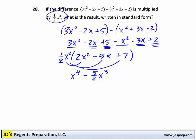Then 1 half times 7 is plus 7 halves. x squared times, there is no variable, leaves me with x squared. So in the end, I have x to the 4th minus 5 halves x to the 3rd plus 7 halves x squared.